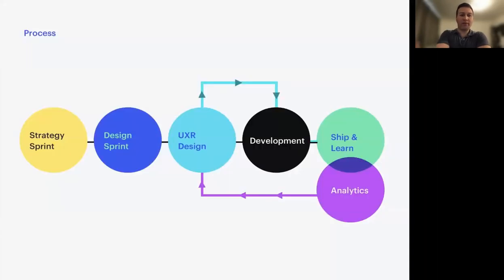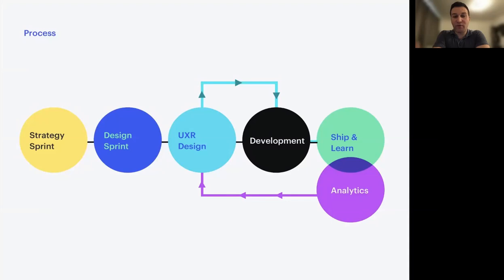A little bit about our process and how we operate. We start our clients with a strategy sprint to really help understand what the goals are for a project — not so much what the product will look like or feel like, but ultimately what are the goals for this type of product, who's the target audience. The elevator pitch, if you will — a little bit more high level — to make sure everyone's on the same page in terms of the direction for the product.